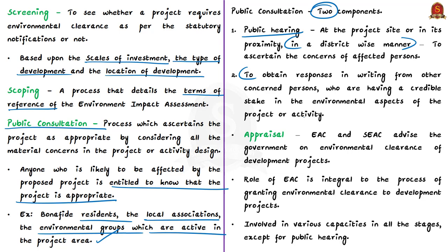The fourth stage is appraisal, where the Expert Appraisal Committee plays a key role. These committees exist at both the union and state levels — for states, there is the State Expert Appraisal Committee or SEAC. They are set up to advise the government on environmental clearance of developmental projects. The role of EAC is integral to the process of granting environmental clearance, and EAC or SEAC are involved in various capacities in all stages except for public hearing.